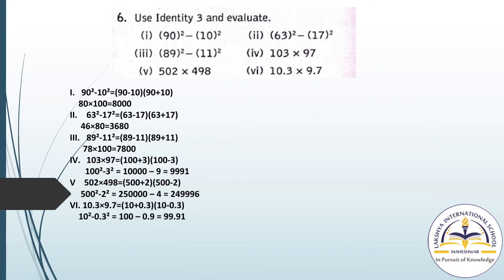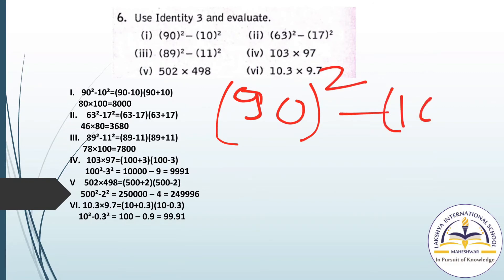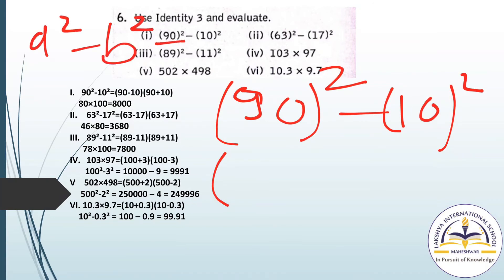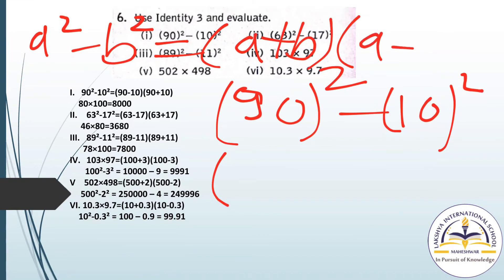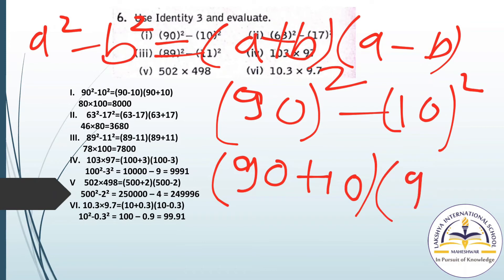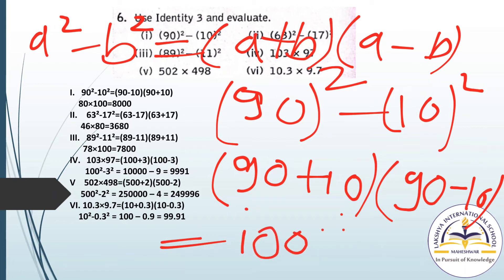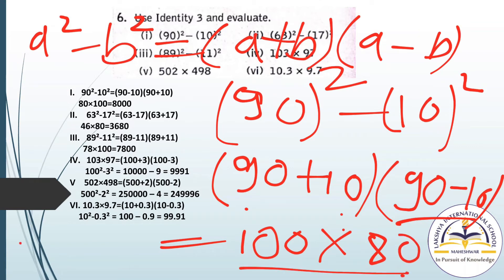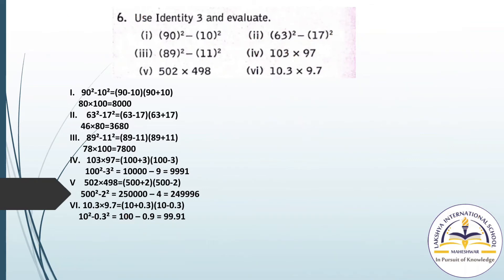Question number 6: use Identity 3 and evaluate. First: 90 square minus 10 square. Using the identity A² - B² = (A + B)(A - B), we write (90 + 10)(90 - 10). That is 100 multiplied by 80, giving 8000 as the answer.